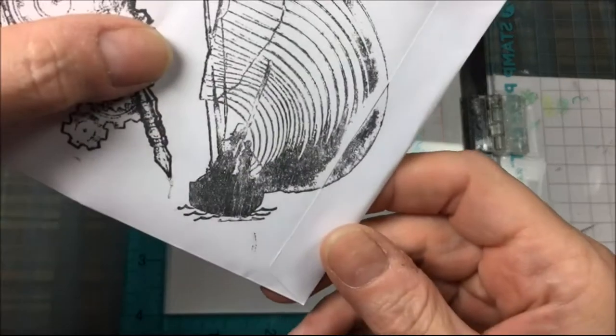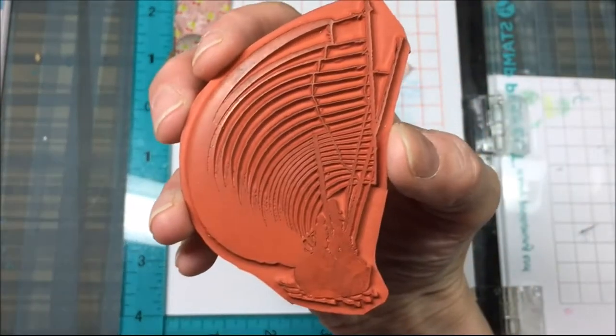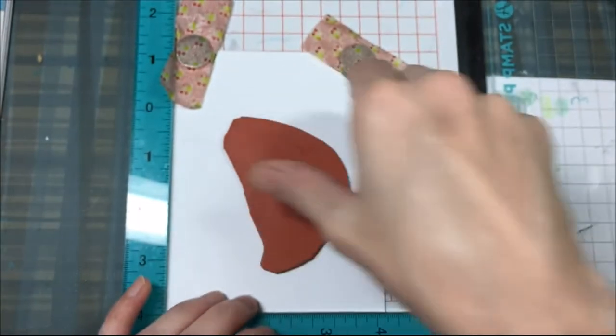I'll be making a masculine type card and I'll be using a spotlight technique. This is a red rubber stamp and it's the fishing boat, the Japanese fishing boat silhouette.